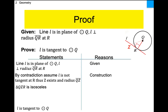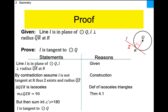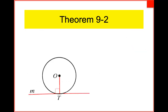Proof by contradiction: you negate, arrive at a contradiction — you just made two right angles in a triangle. Therefore QZR being isosceles with a 90-degree angle can't work. We just proved it by contradiction, QED. Write this down — this is the converse to 9.1, it's 9.2. It says exactly the converse: if you have a line that is perpendicular at this point, then you have a tangent.